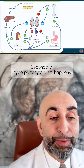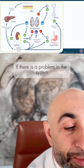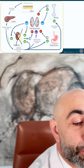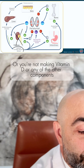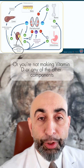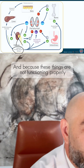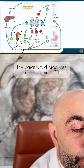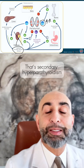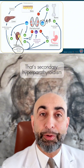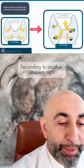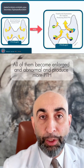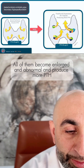Secondary hyperparathyroidism happens if there is a problem in the system where either the kidney fails, or you're not making vitamin D, or any of the other components. Because these things are not functioning properly, the parathyroid glands produce more and more PTH — that's secondary hyperparathyroidism, secondary to another problem. All of them become enlarged and abnormal and produce more PTH.